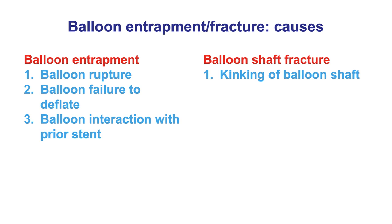What causes balloon entrapment and fracture? For balloon entrapment, a frequent cause is balloon rupture, which then modifies the balloon and may get it entrapped, especially in heavily calcific coronary vessels. Another reason is failure to deflate, and a third is interaction with a previously placed stent.